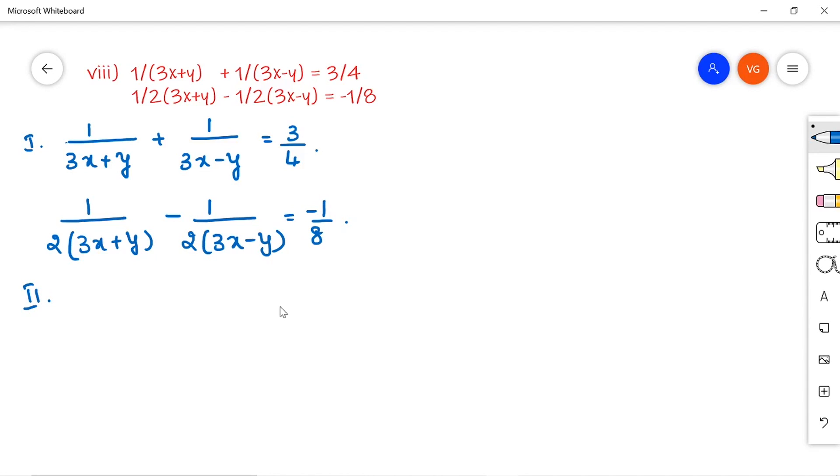After solving these many number of problems, I think by this point of time you will be coming to know how to assume the other variables. So, 1 by 3x plus y, you can take it as u and 1 by 3x minus y, you can take it as v.